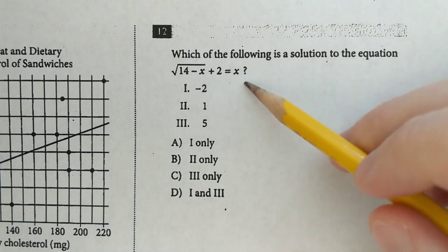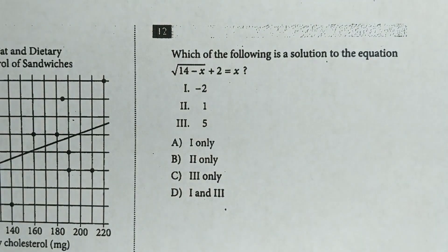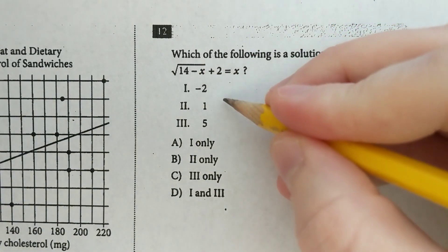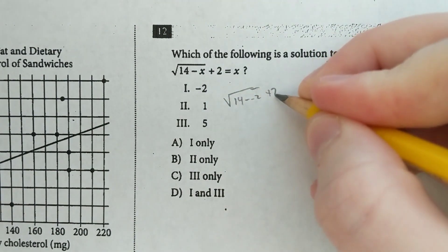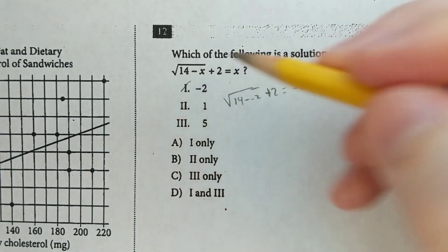On this one, we could bring the 2 over and square both sides, and then we'd have to factor everything. A lot of chances to make a mistake if you do all that. Instead, let's just plug these in. So the square root of 14 minus negative 2 plus 2, does that equal negative 2? Definitely not, so that's out.